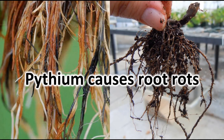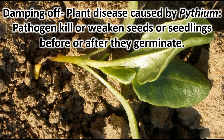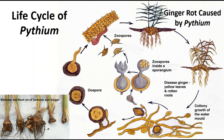You can see here the root rot disease caused by Pythium, and this is what damping off looks like — a plant disease caused by Pythium where the pathogen kills or weakens the seeds or seedlings before or after they germinate. This is the life cycle of Pythium. The life cycle has both sexual and asexual reproductions. The sexual reproduction involves the formation of oospores, and asexual reproduction is brought about by zoospores. What you are seeing on the screen is the ginger rot caused by Pythium.